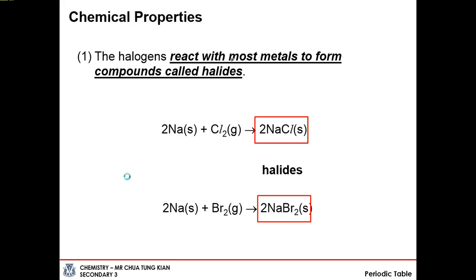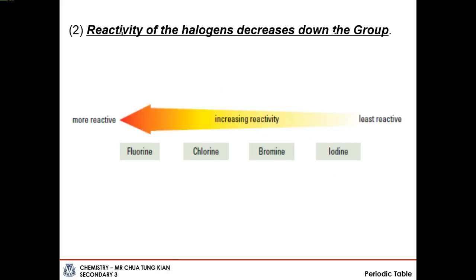Chemical properties of halogens: they react with metals to form compounds called halides. For example, sodium plus chlorine gives sodium chloride, and sodium plus bromine gives sodium bromide. The reactivity decreases down the group. Why? For metals, reactivity increases down the group because electrons are more easily lost. But for halogens, which are non-metals, they need to gain electrons during a chemical reaction.